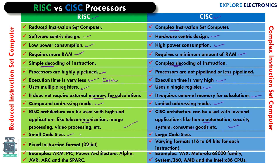RISC has small code size due to the reduced instruction set; CISC has large code size due to complex instructions. RISC has a fixed 32-bit instruction format, while CISC processors support 16-bit up to 64-bit instructions. Examples of RISC processors include ARM, PIC microcontrollers, Power architecture, Alpha, AVR, ARC, and SPARC. CISC examples include Intel x86 CPUs, Motorola 6800 families, and VAX systems.